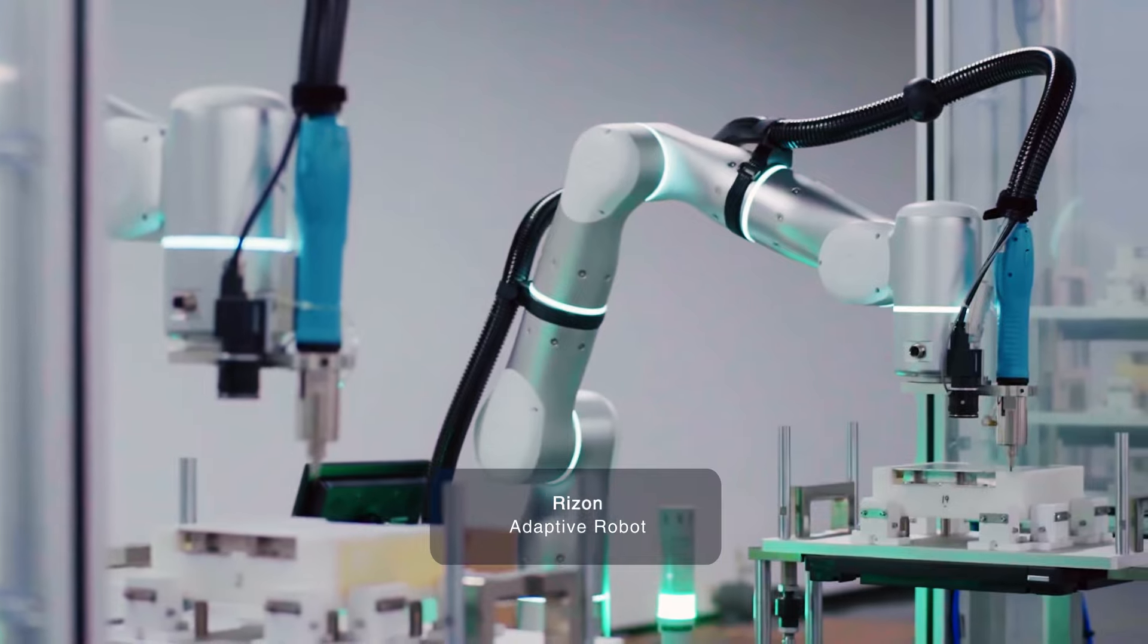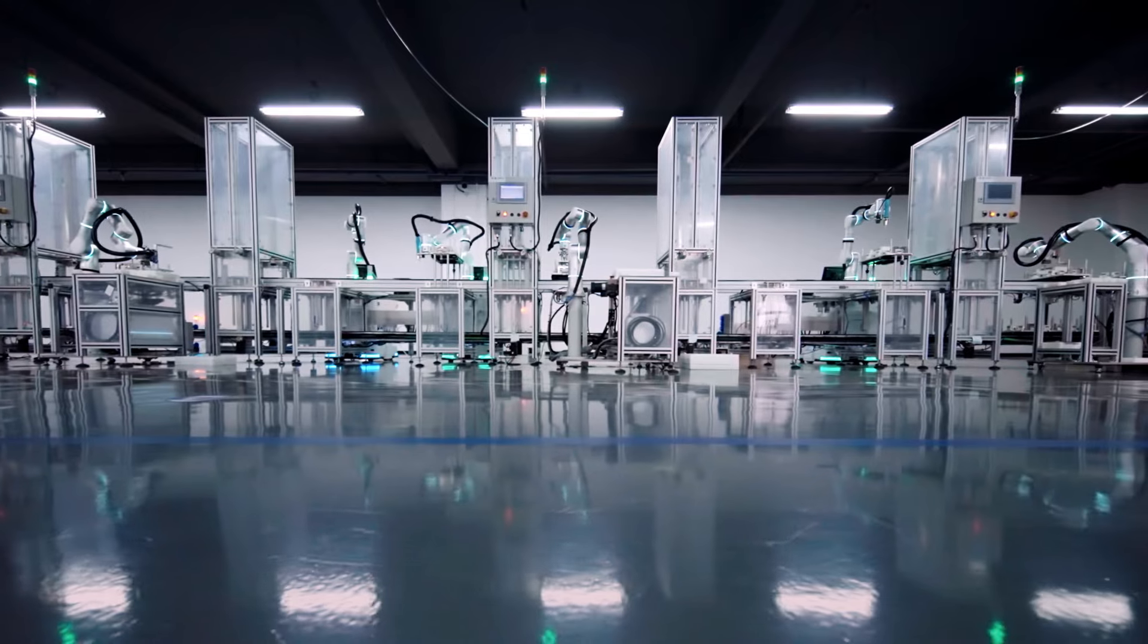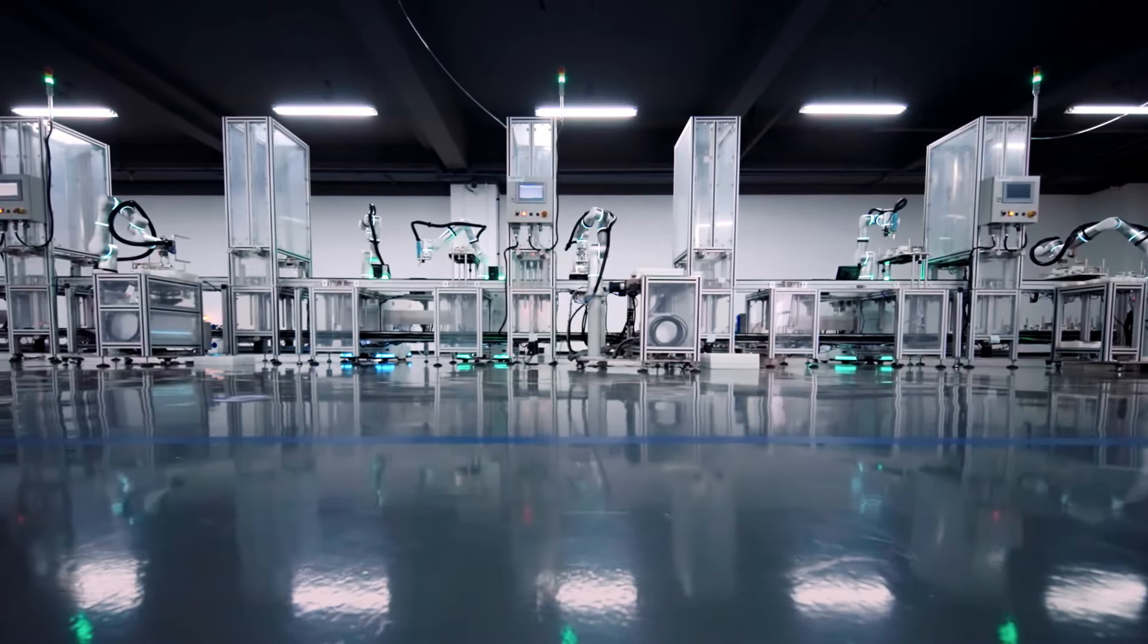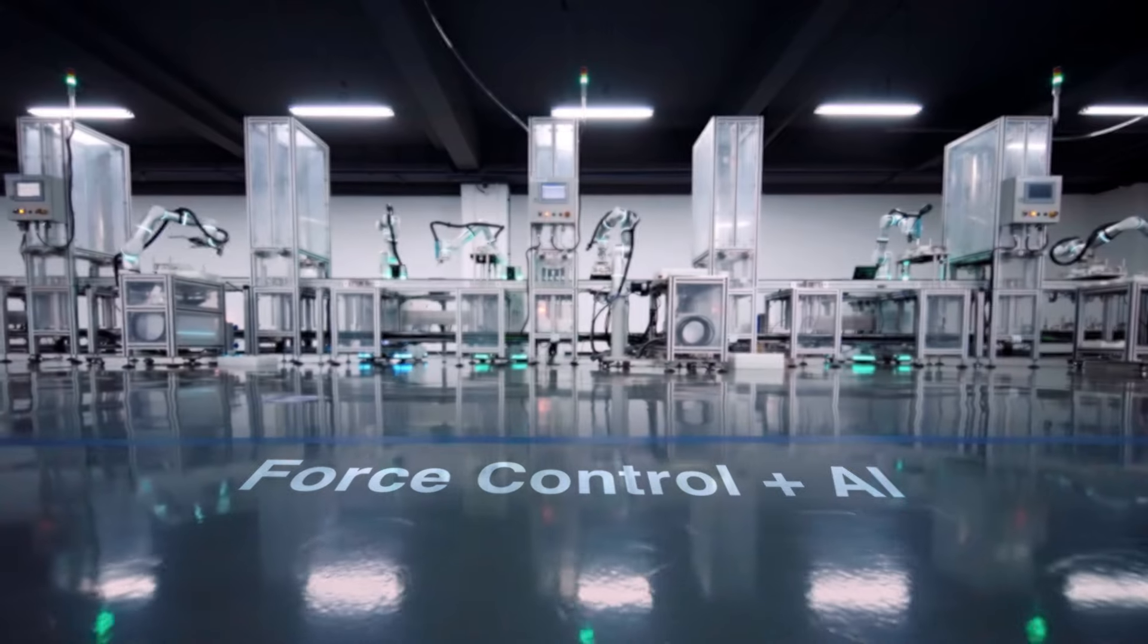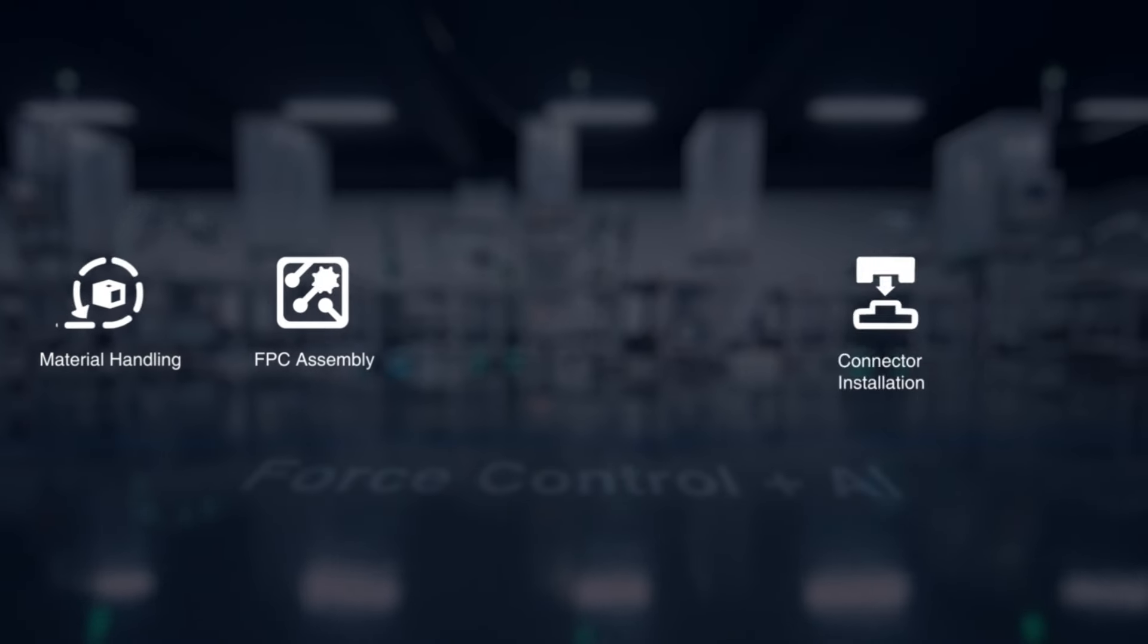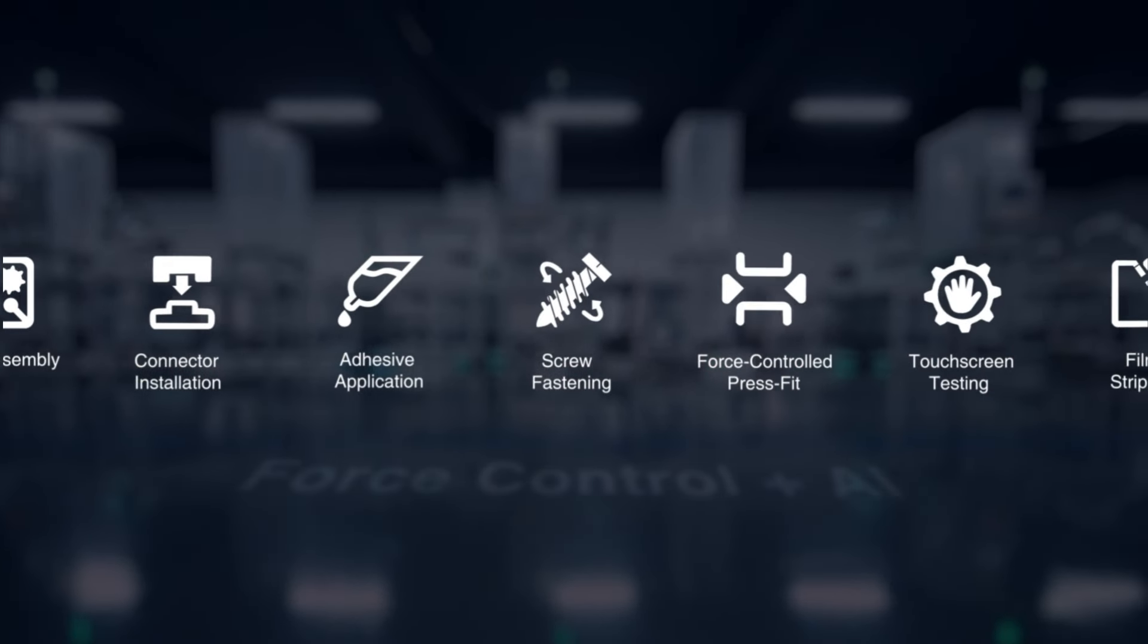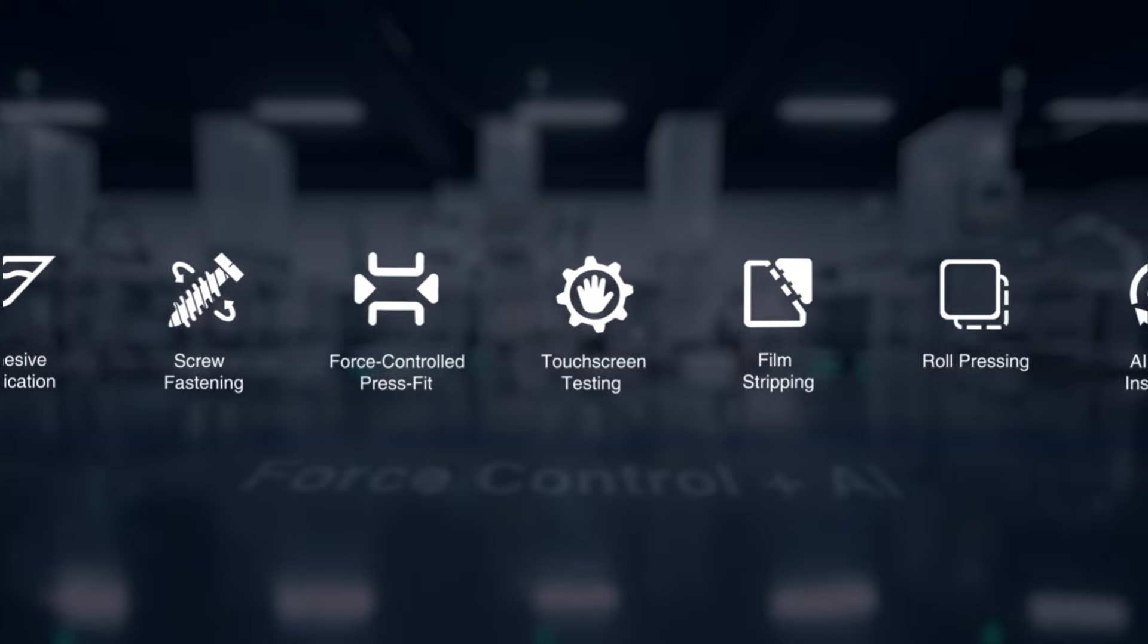Flexiv's Adaptive Robotic Technology lies at the heart of the Adaptive Production Line. By fusing industrial-grade force control with AI technology, Adaptive Robots easily handle tasks that traditional robots find challenging.